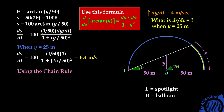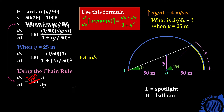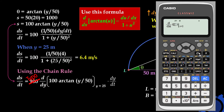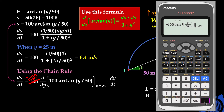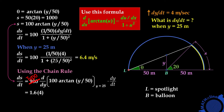Now let us apply the chain rule. From the equation for S, we go directly to our calculator: d over dy of S when y is 25 meters, times dy over dt. From our calculator we get 1.6 times dy over dt, which equals 4. We also get the answer of 6.4 meters per second.